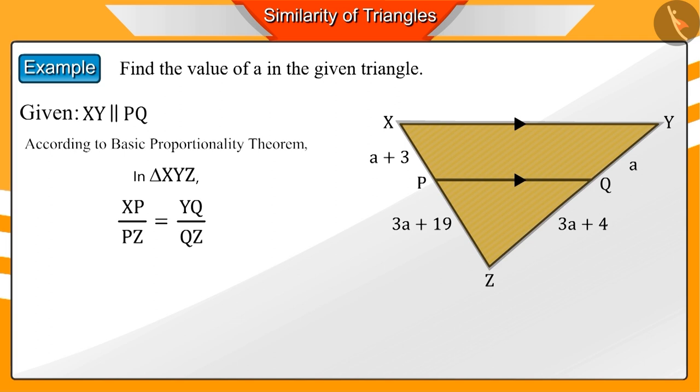Can you guess the next step? In the figure, we can see that XP is equal to A plus 3, PZ is equal to 3A plus 19, YQ is equal to A, and QZ is equal to 3A plus 4.